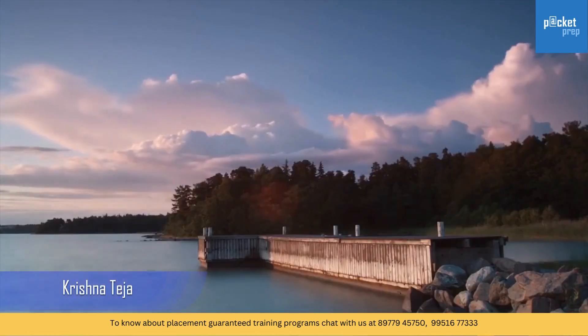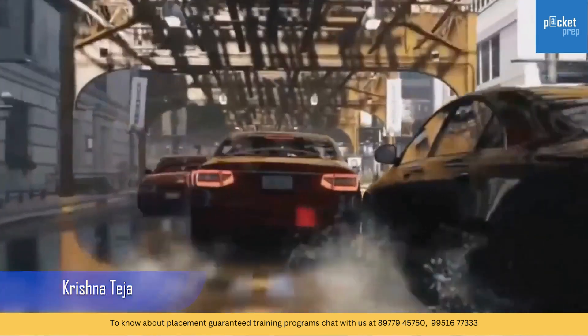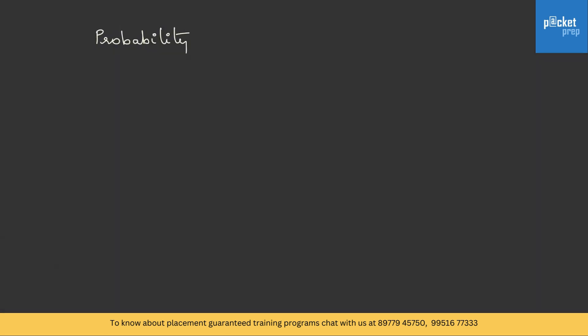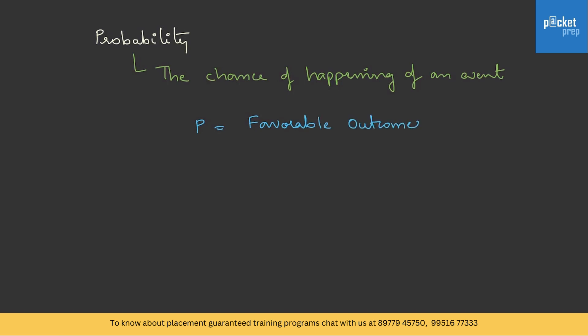Probability has a wide variety of applications in real life. It is used in weather prediction, computer games and even in letter prediction in smartphones. This is a very interesting topic, let's get into it. Probability is the chance of happening of an event. In mathematical terms, we can write probability as favorable outcomes by total outcomes.